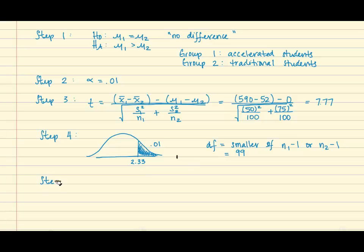For step 5 we can state our decision and our conclusion. So since we are able to reject the null hypothesis, we can state that there is sufficient evidence to suggest that the students in an accelerated program at a local high school have higher scores on the math portion of the SAT than their comrades.